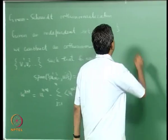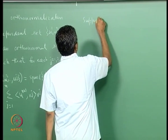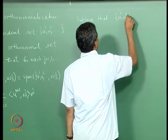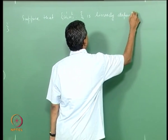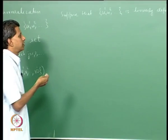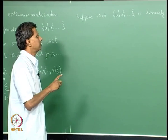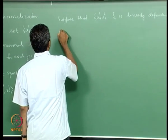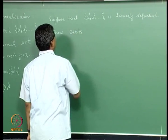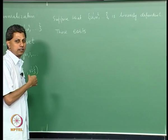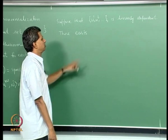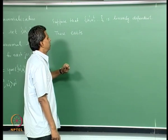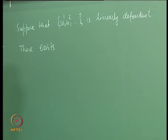Suppose this set is linearly dependent. Then we have learnt that there is at least one vector which can be written as a linear combination of the preceding vectors. I will assume that the zero vector does not belong to this set — if the zero vector is already there you do not have to check linear dependence. So I will assume these are non-zero vectors and I want to see when it follows from the procedure that this set is linearly dependent.